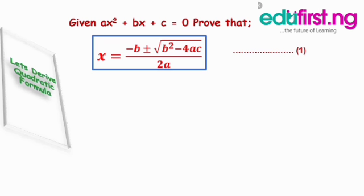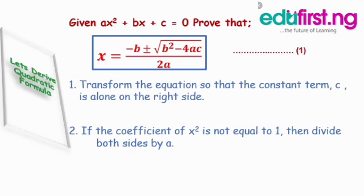Let's prove the quadratic formula. We are given that ax squared plus bx plus c equals zero — call this equation zero. We should prove that x equals negative b plus or minus square root of b squared minus 4ac, divided by 2a — call this equation one. We have to use equation zero to prove equation one.